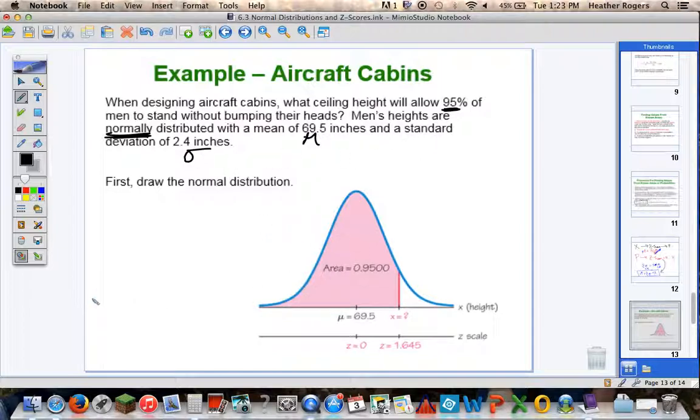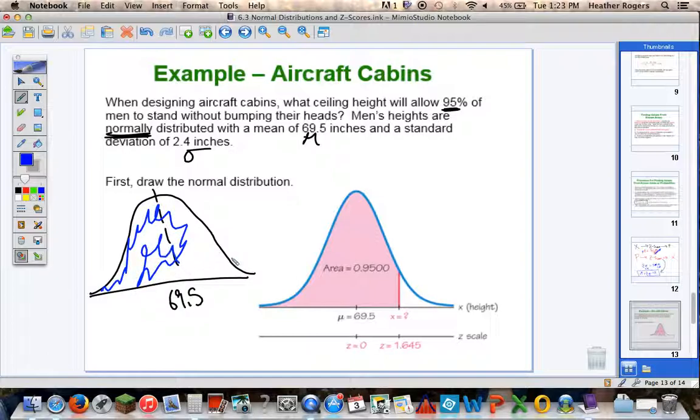So, first we draw the normal distribution. I'm going to draw through what you see here. I'm going to draw my normal. My mean is 69.5. I want 95%, 95% to be shaded. So, I'll shade all the way over to 95%. So, my shaded region here is 0.95. I need a Z-score that represents that 0.95. So, I go to my table, my Z-score table, and I look at 0.95, and I get 1.645.